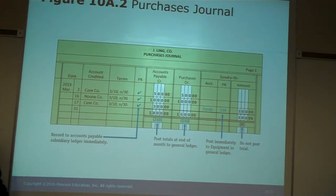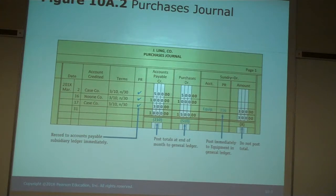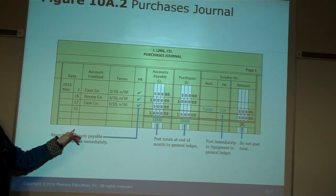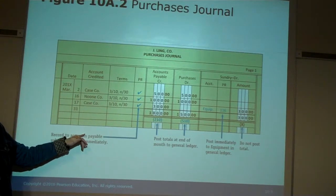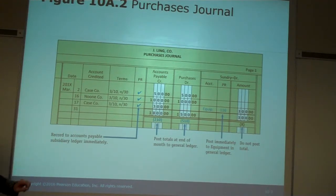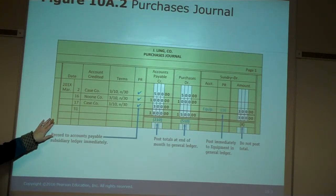With the special journals — going back to where we were using the general journal — we had to post for every single transaction to the purchases. This would just save us a little bit of time. How much time would it save us if we were using a computerized accounting system? Probably no different, because as soon as we hit the save button, Peachtree posted it to the appropriate accounts for us. But when we're doing things by hand, this really can save us a little bit of time.